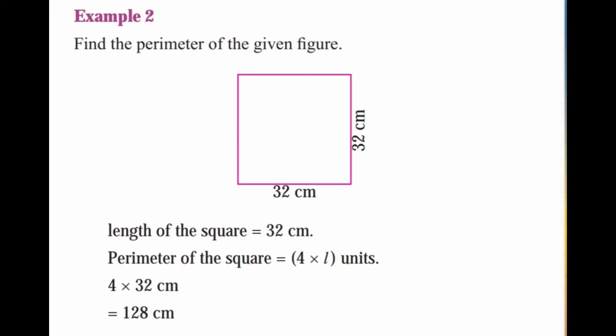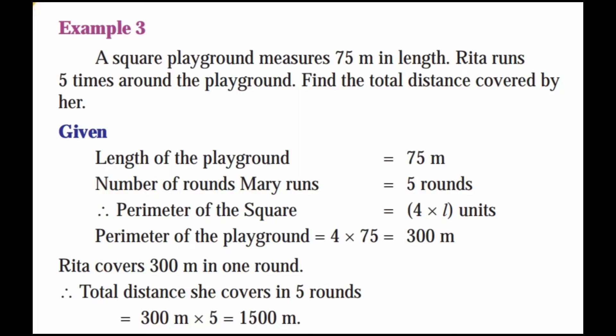Third example: a square playground measures 75 meters in length. Rita runs 5 times around the playground. Find the total distance covered by her. Given: length of the playground is 75 meters, number of rounds Rita runs is 5. Perimeter of the square is equal to 4 into 75, which is 300 meters. Rita covers 300 meters in 1 round. So the distance covered in 5 rounds is 300 into 5, which equals 1500 meters.